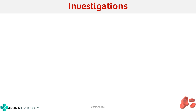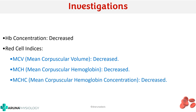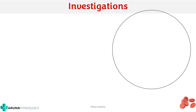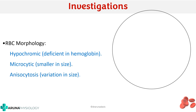The key investigations for iron deficiency anemia start with hemoglobin level — if decreased, it confirms anemia. Red cell indices are then assessed: in iron deficiency anemia, the mean corpuscular volume (MCV), mean corpuscular hemoglobin (MCH), and MCHC are all decreased. The peripheral blood smear will show hypochromic microcytic RBCs, with anisocytosis (variation in size) and poikilocytosis (variation in shape).